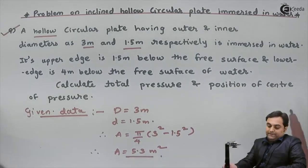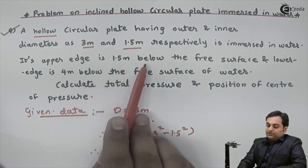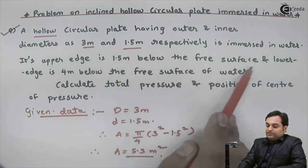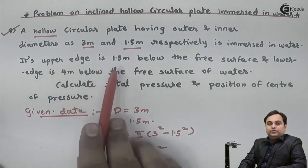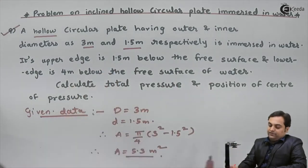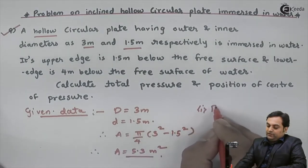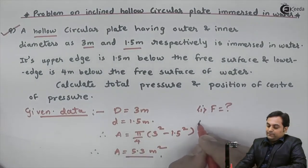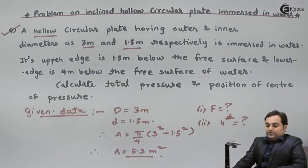It is given that the upper edge is 1.5 meters below the free surface and the lower edge is 4 meters below the free surface. I will show this on the diagram. We need to calculate the total pressure, which is the hydrostatic force F, and the position of the center of pressure, which is h-star.